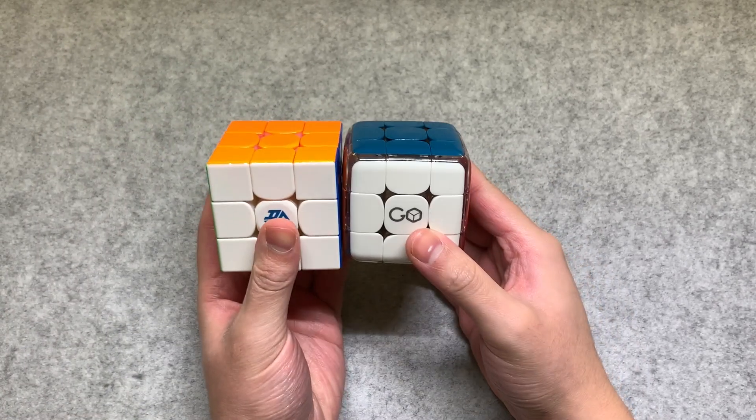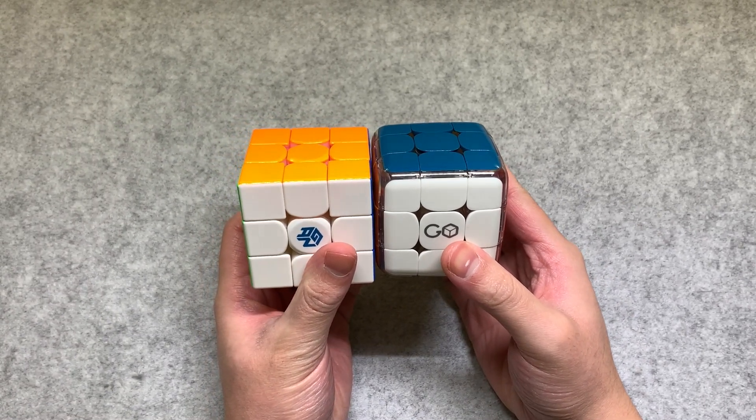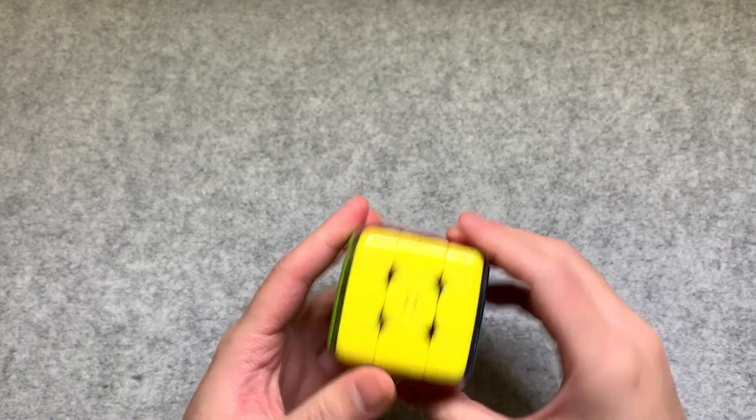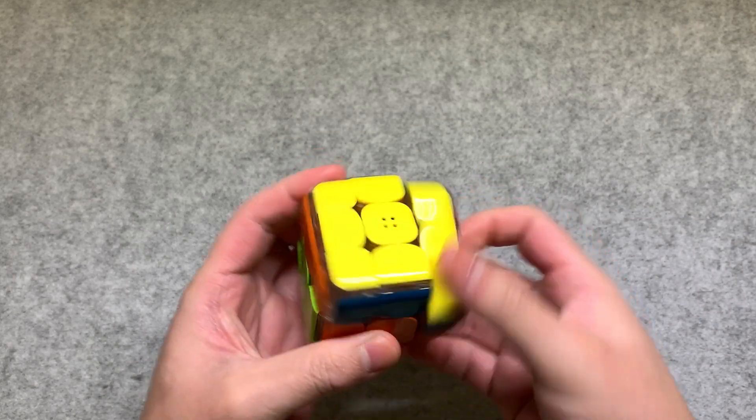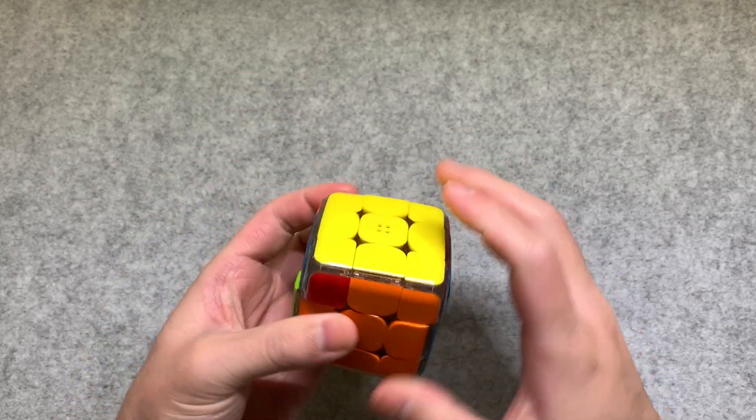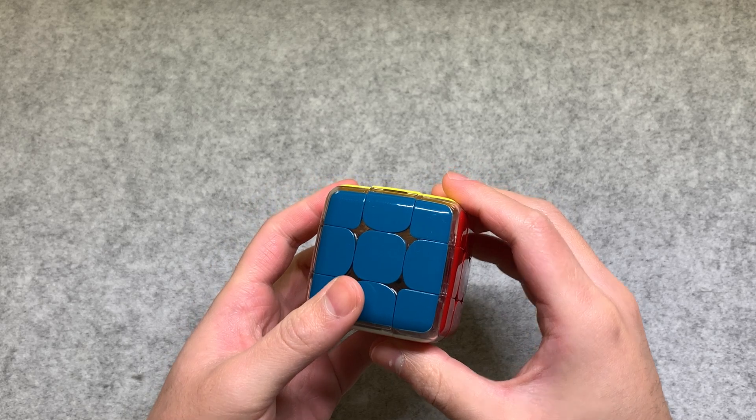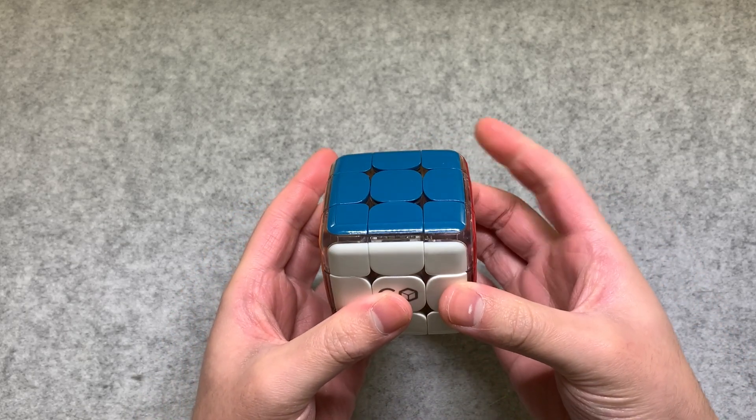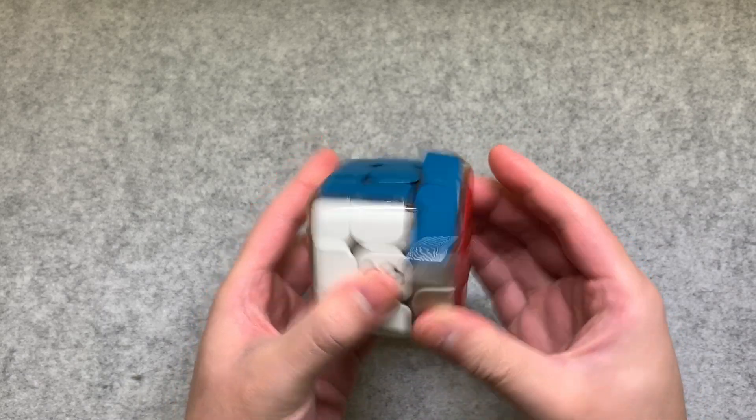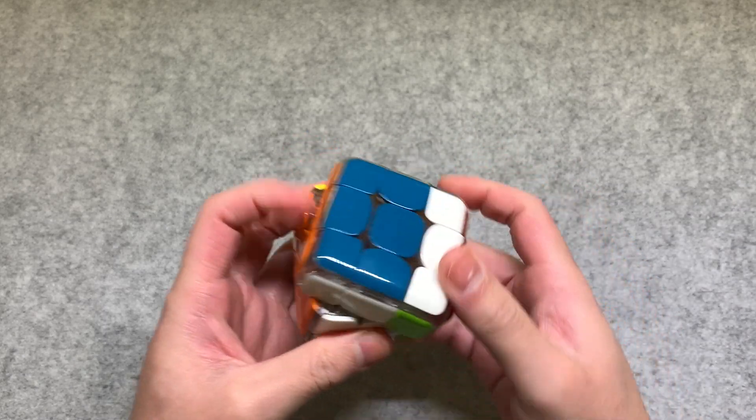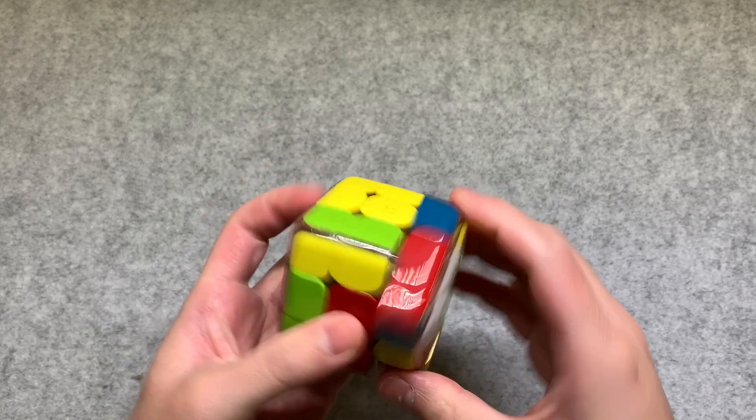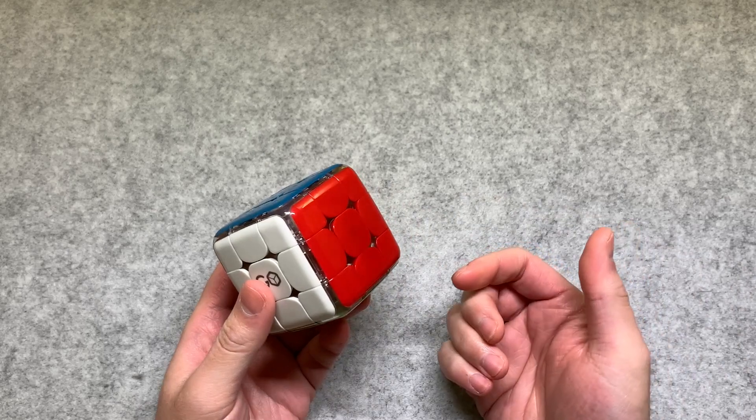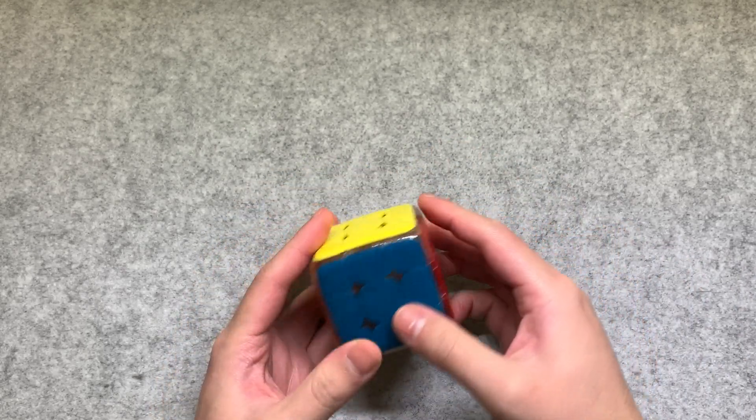It seems relatively standard, a bit smaller than usual I'd say. Here's it compared to a GAN 14. It's actually around the same size. Let's get into first turns. Whoa that is a lot better than I thought it would be.